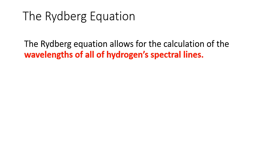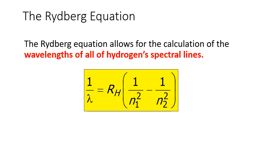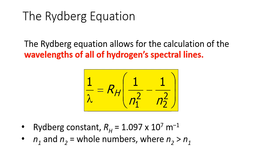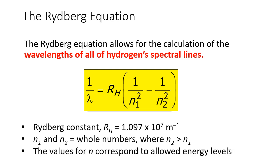The Rydberg equation was the first equation that allowed us to calculate all of the wavelengths for hydrogen spectral lines, whether in the visible, infrared, or ultraviolet region. The equation states that one over the wavelength equals R sub H — the Rydberg constant — times one over n₁ squared minus one over n₂ squared. The Rydberg constant is 1.097 × 10⁷ inverse meters. n₁ and n₂ are whole numbers representing energy levels, with n₂ always greater than n₁. n₁ is the lower energy level the electron falls to; n₂ is the higher energy level where the electron starts.